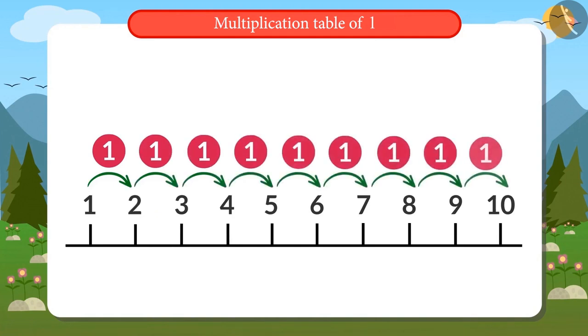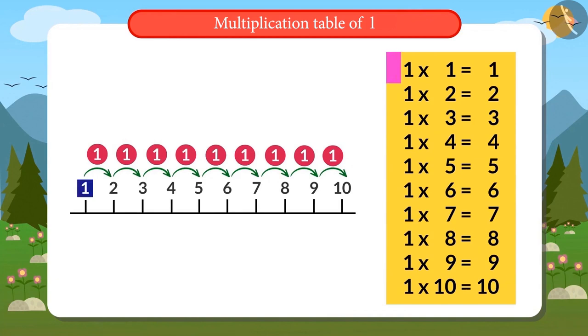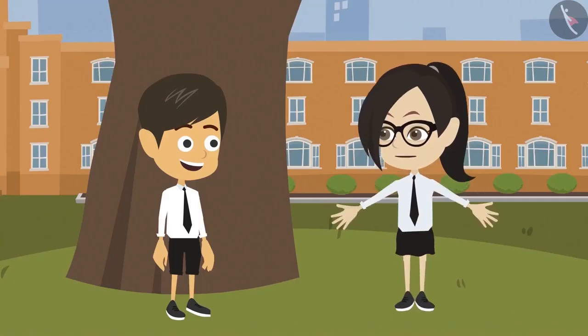This is the number line and I will read out the table of 1. 1×1 is 1, 1×2 is 2, 1×3 is 3, 1×4 is 4, 1×5 is 5, 1×6 is 6, 1×7 is 7, 1×8 is 8, 1×9 is 9, 1×10 is 10.